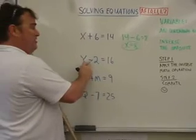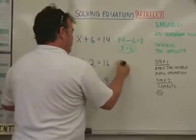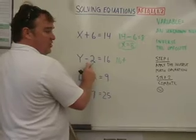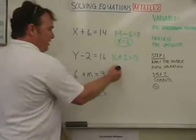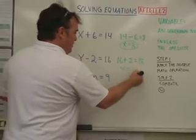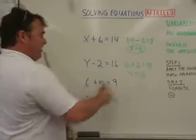The opposite of subtraction is addition. Adding. So we'll take 16 plus 2, which equals 18. Y equals 18. Why? Because that's the way it is. That's why. All right.